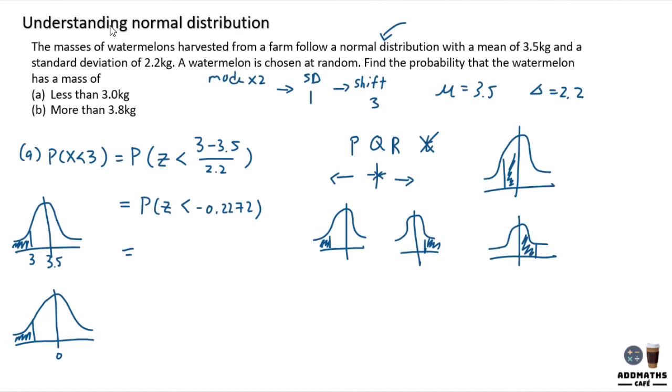So in this case, it is less than which means your graph which is going to the left side. So you press p which is your 1. Then type in the value negative 0.2272. And the answer will give you 0.41013 as the final answer.